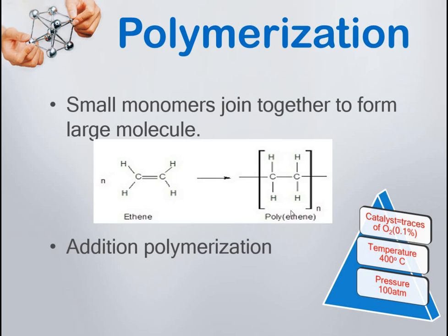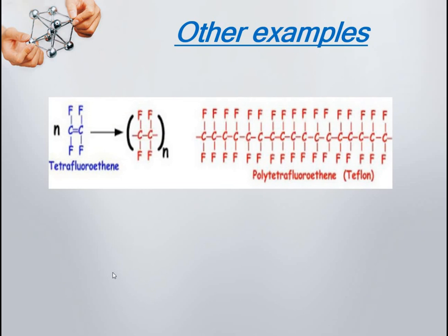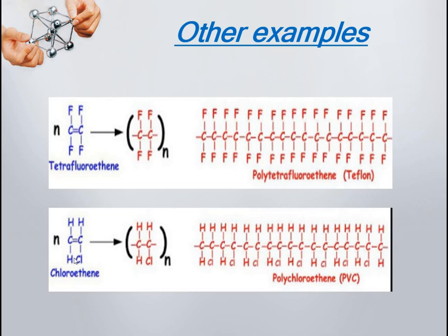Other examples of alkene polymerization include substituted alkenes. Tetrafluoroethene — where all four hydrogens are replaced by fluorine — polymerizes to form polytetrafluoroethene, commonly known as Teflon, used in various plastics. Chloroethene, with chlorine at one position, polymerizes to form polychloroethene, also called PVC (polyvinyl chloride) — another common plastic used in household articles and pipes.